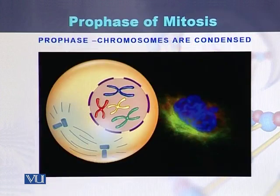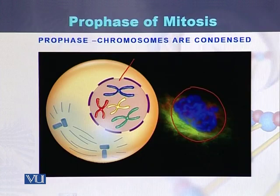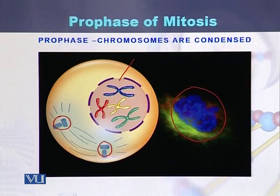In prophase, chromosomes can be seen as condensed. In this diagram the chromosomes are short in size as well as thick. In the second diagram, the nuclear membrane is dissolving, chromosomes are more visible, centrioles have divided, and spindle fibers are present within the cell.